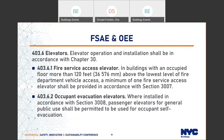The fire service access elevator (FSAE) and occupant evacuation elevator (OEE) went into effect with the 2014 code, but unfortunately the industry is still having difficulty understanding the requirements. The FSAE is often confused with regular fire service Phase 1 and Phase 2, which is incorrect — the FSAE has very unique and numerous requirements. Per BC 403, in high-rise buildings with an occupied floor more than 120 feet above the lowest level, you are required to provide at least one fire service access elevator meeting the requirements of Section 3007.